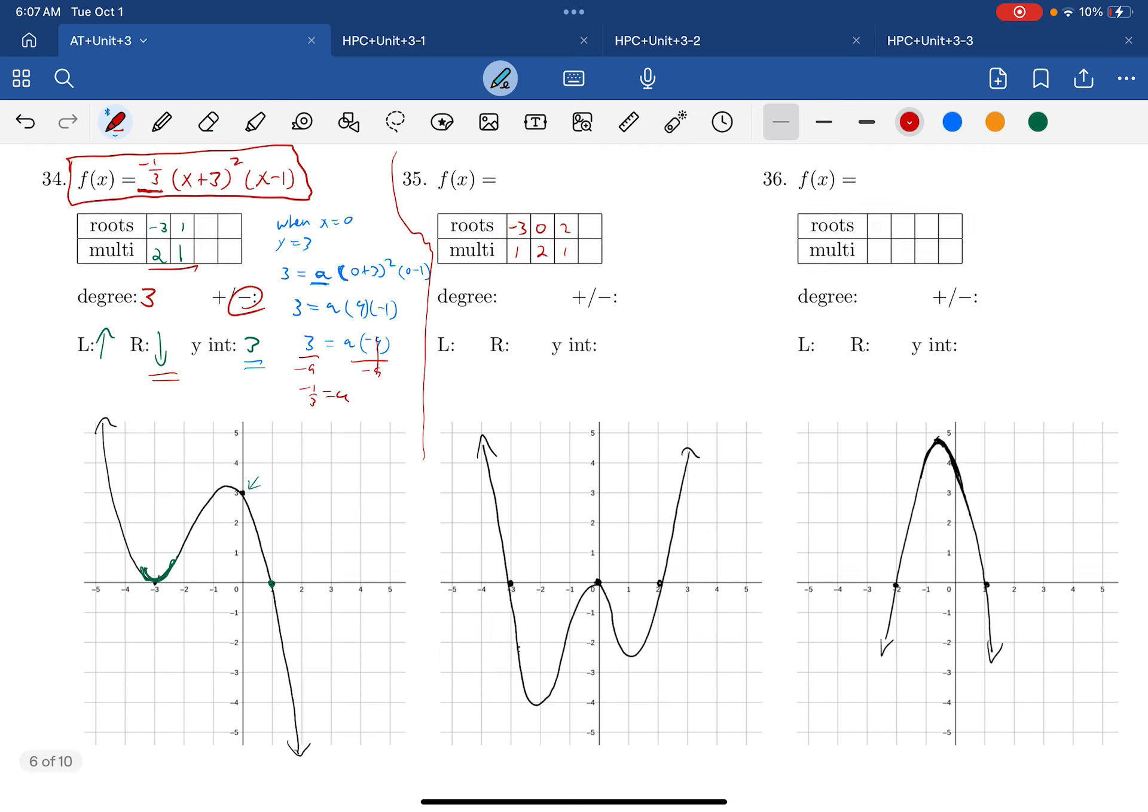This looks like to the right it goes up, to the left it goes up. The degree must be four. This is a positive, right? And the y-intercept is zero.